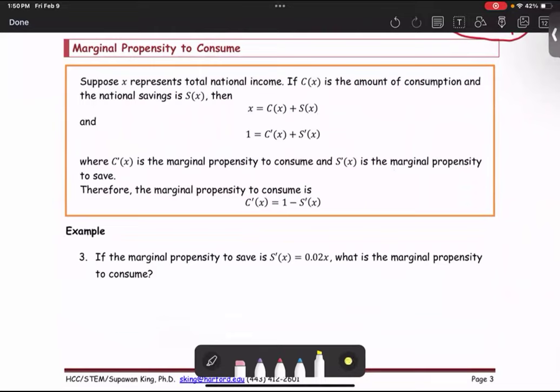Marginal propensity to consume. Suppose X represents total national income. If C(X) is the amount of consumption and the national savings is S(X), then X, which is the income, is the combination of the consumption and the savings.